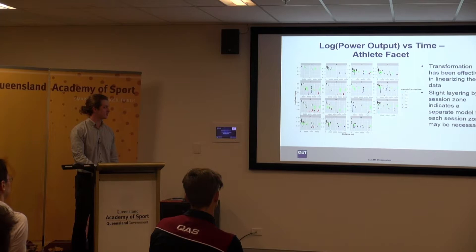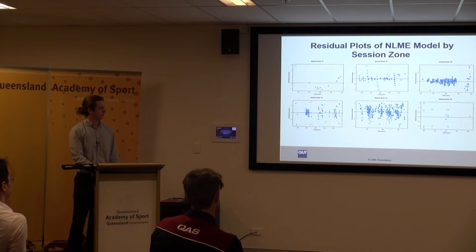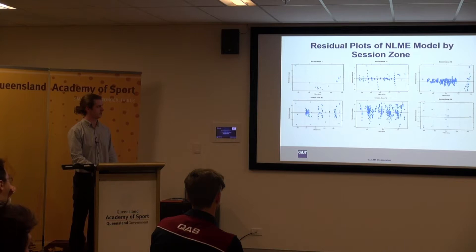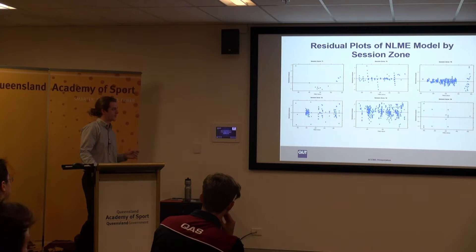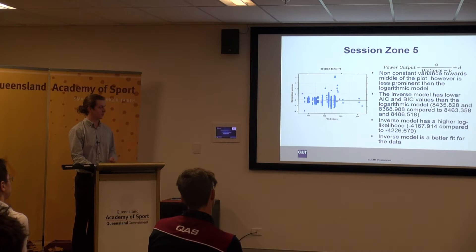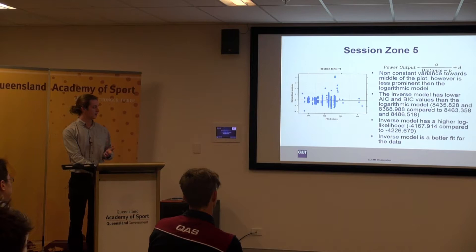For the actual modelling I used mixed effect models, where power output is described by the log of distance with a random effect for the athlete. Six models were fitted, one for each session zone. The residual plots show a quite good fit for session zones 2, 3, 4 and 6; however, session zone 1 shows definite curvature and session zone 5 shows non-constant variance. I refitted those two models — trying an inverse distance model for T5 — which gave a slightly better fit, with AIC, BIC and log likelihood all indicating improvement.